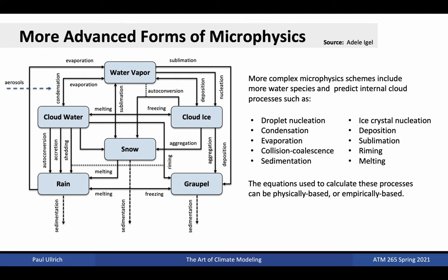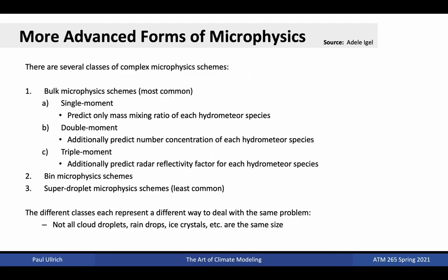More modern schemes generally incorporate five or more water species, including both liquid and frozen species. Additionally, these schemes incorporate interactions with aerosol species, which are used as cloud condensation nuclei. These schemes also predict cloud processes such as droplet nucleation, condensation, evaporation, collision coalescence, sedimentation, ice crystal nucleation, deposition, sublimation, rimming, and melting. The equations that describe transitions between species usually incorporate a mix of theory and empirical tuning. More complex microphysics schemes can be classified into bulk microphysics schemes, which tend to be the most commonly employed, bin microphysics schemes, and superdroplet microphysics schemes, which are rare.